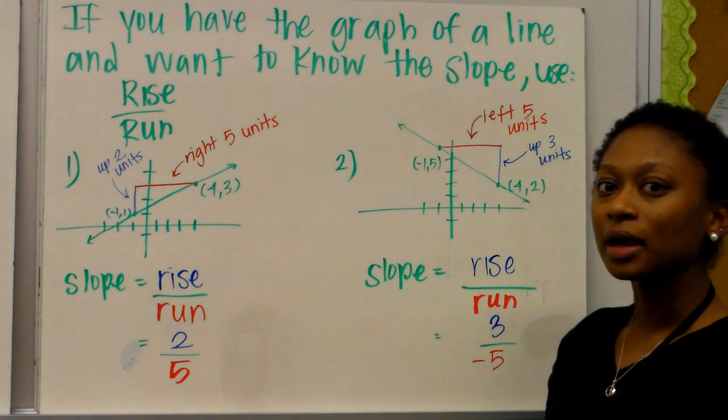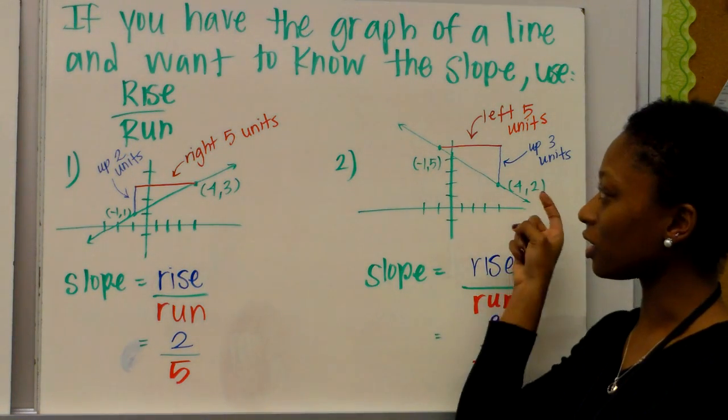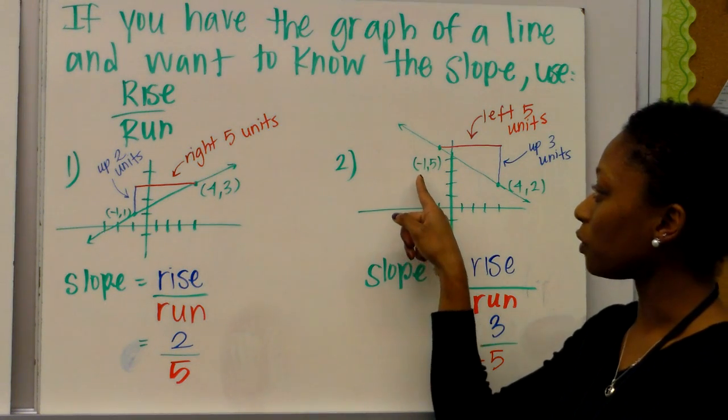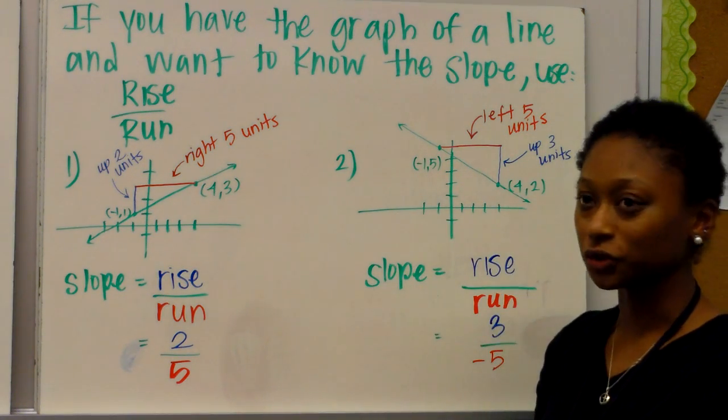Take a look at this example. It's a bit different. It's going the other way. So it's decreasing. And you have the point negative 1, 5, and 4, 2.